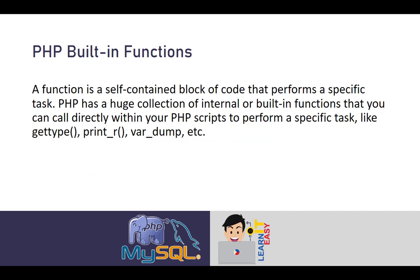Let's start with PHP built-in functions. A function is a self-contained block of code that performs a specific task. PHP has a huge collection of internal or built-in functions that you can call directly within your PHP scripts to perform a specific task, like get_type, print, var_dump, and so on. These are functions already made by PHP developers for us — we just call them without having to create them ourselves. Instead of reinventing the wheel, you can just invoke a function with a specific purpose and supply the argument it needs.